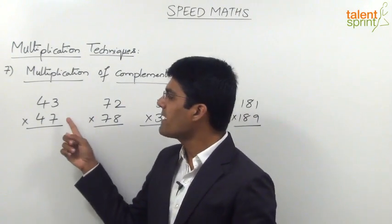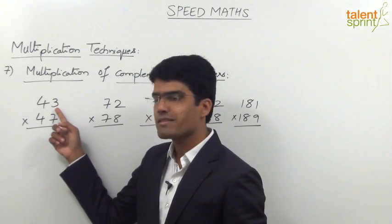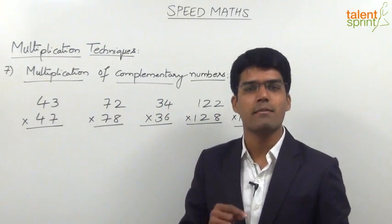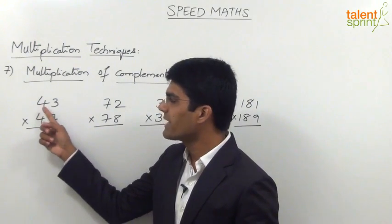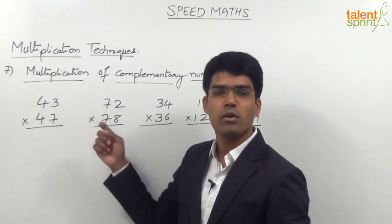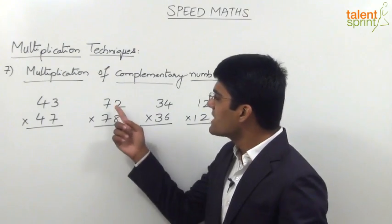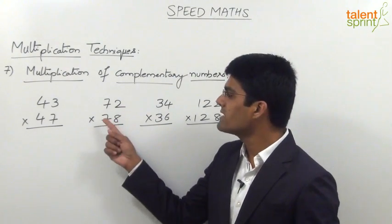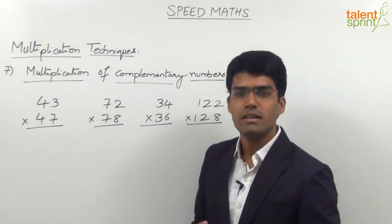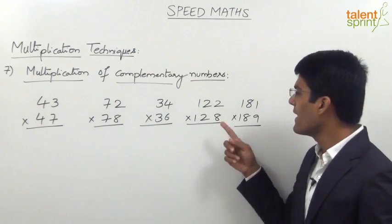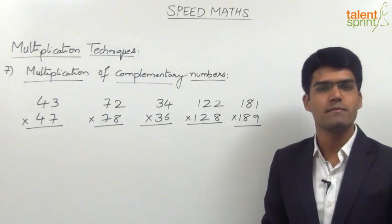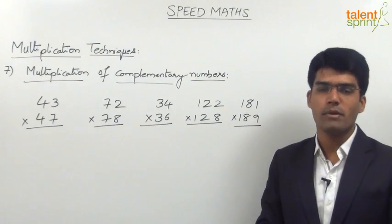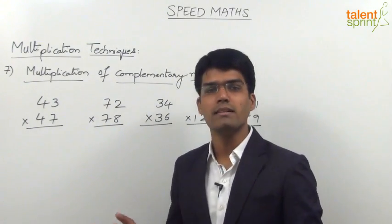For example, 43 and 47. The units place of the first number is 3 and the units place of the second number is 7. 3 plus 7 is equal to 10, so units place adds up to 10, and the tens place — 4 and 4 — are equal. Similarly, in case of 72 and 78, 2 plus 8 is 10, and the tens places are equal. And likewise in 122 and 128, 2 plus 8 is 10 and the remaining part — 12 and 12 — is equal in both numbers. Such numbers are referred to as complementary numbers, and multiplication of such numbers can be done in simple two steps.